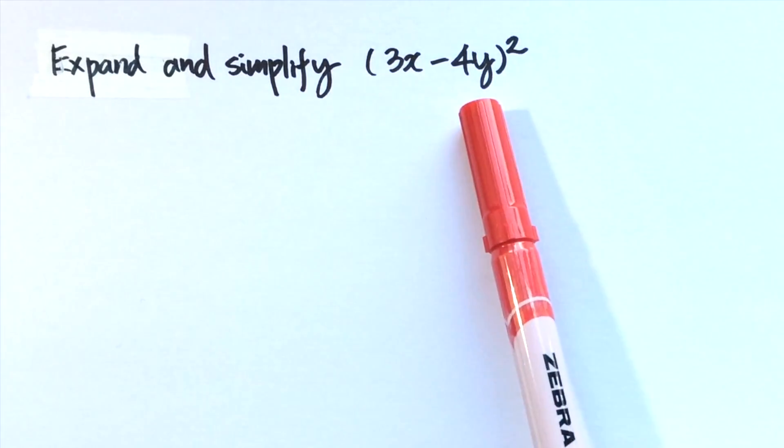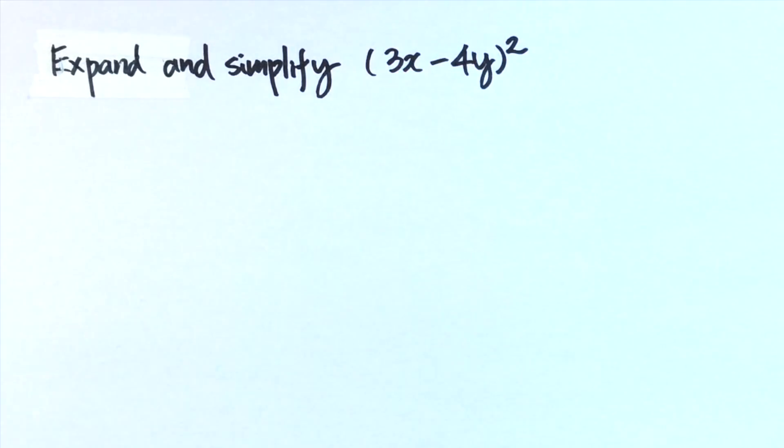Example: expand and simplify this expression, the square of bracket 3x minus 4y.